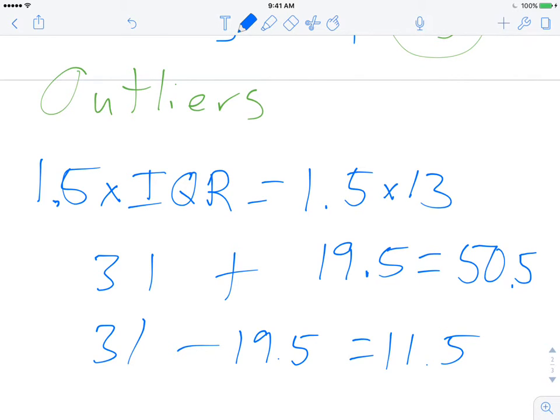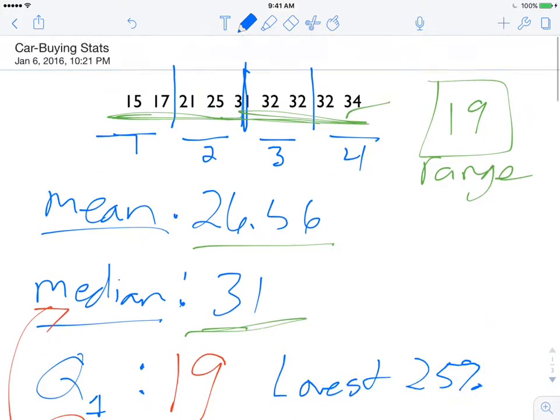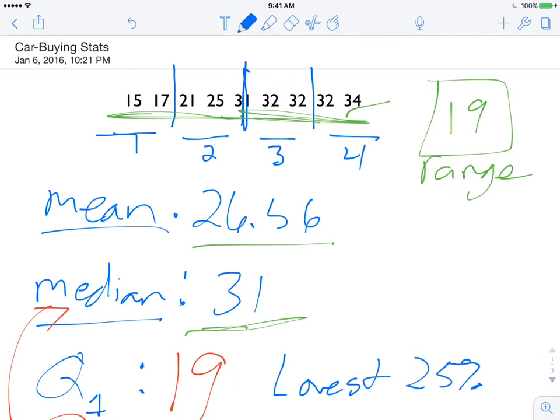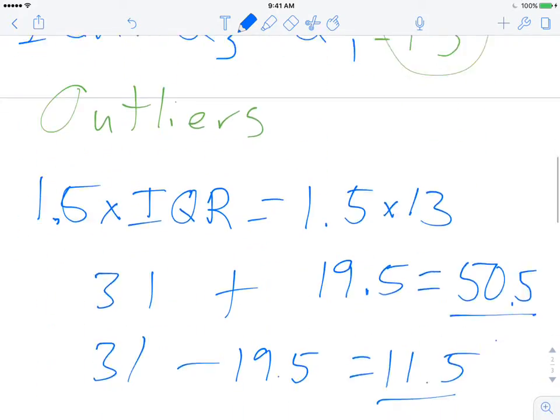So when I look back at my data, I want to make sure that I don't have any numbers that are either higher than 50.5 or lower than 11.5. If I look back at my data, I don't have any that are that high or that low. So there are no outliers in this data range.